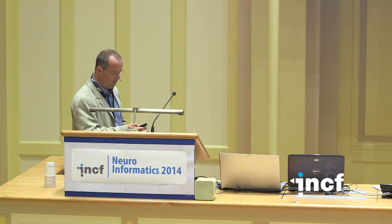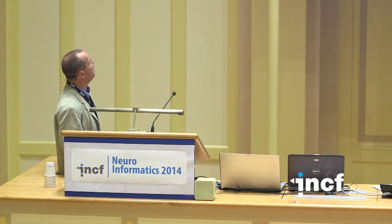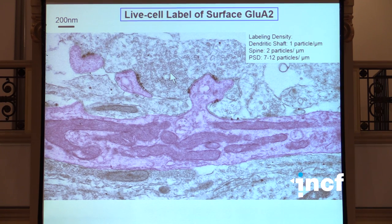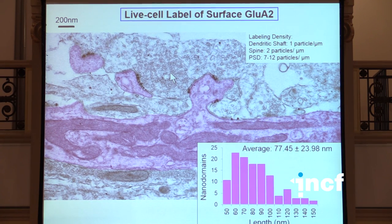Most of the previous EM data hadn't seen this type of organization of the receptors, which was a bit surprising. But we actually found the solution for this - it was just the labeling method that had been used. And so we went on and used pre-embedding, live cell labeling of surface AMPA receptors, using a new antibody very efficient for the extracellular domain of these AMPA receptors, for the GluA2 subunit. And there we found immediately that indeed those receptors at the EM level were localized in these clusters. Not all synapses show this - you see some synapses exhibit diffuse labeling, but in fact most of the spines do exhibit this type of organization. And if you look at the size of these clusters, they are about the same size we found with super-resolution optical microscopy.